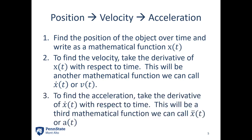Once I have velocity, to find acceleration I simply take the derivative of velocity with respect to time, giving me x-double-dot of t or a of t. For example, we had t squared as position, 2t as velocity, and the derivative of 2t with respect to t is just 2. So the acceleration would be 2 meters per second squared. So I'm taking derivatives to go from position to velocity, and from velocity to acceleration.